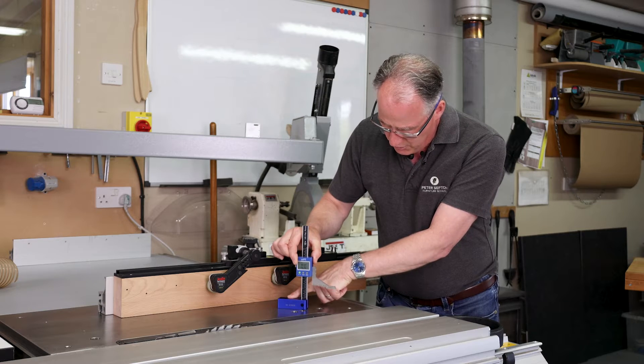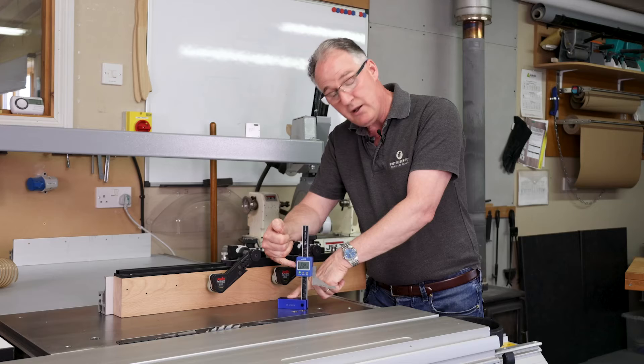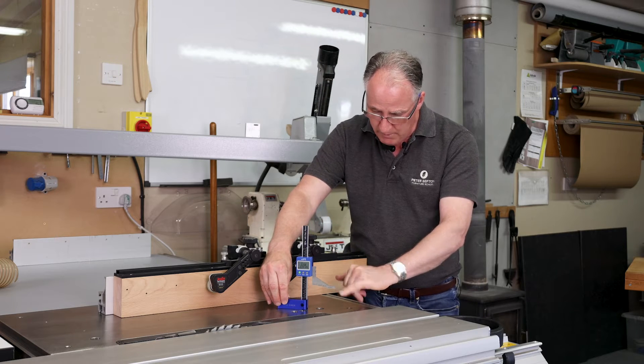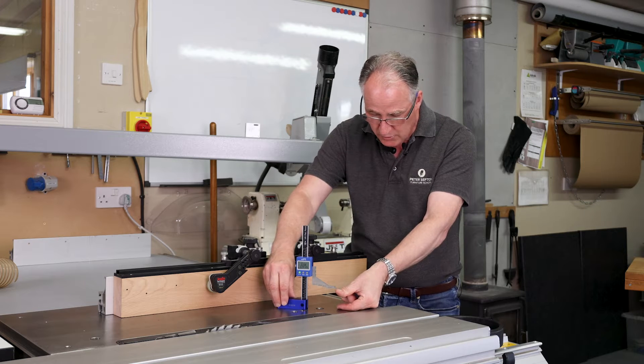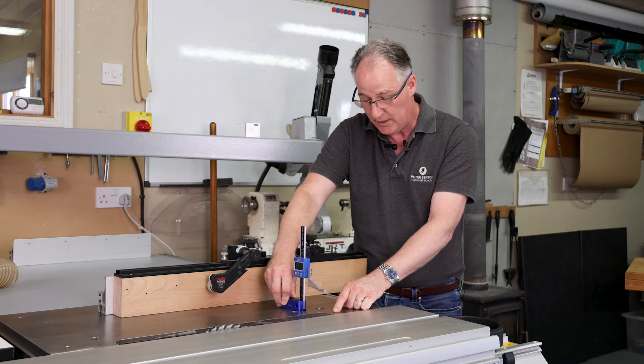What we can also do at any particular height is lock it off with a little nut at the back there, which means that the stainless steel scriber could be used to mark this onto another piece of material, the exact height you're working to.